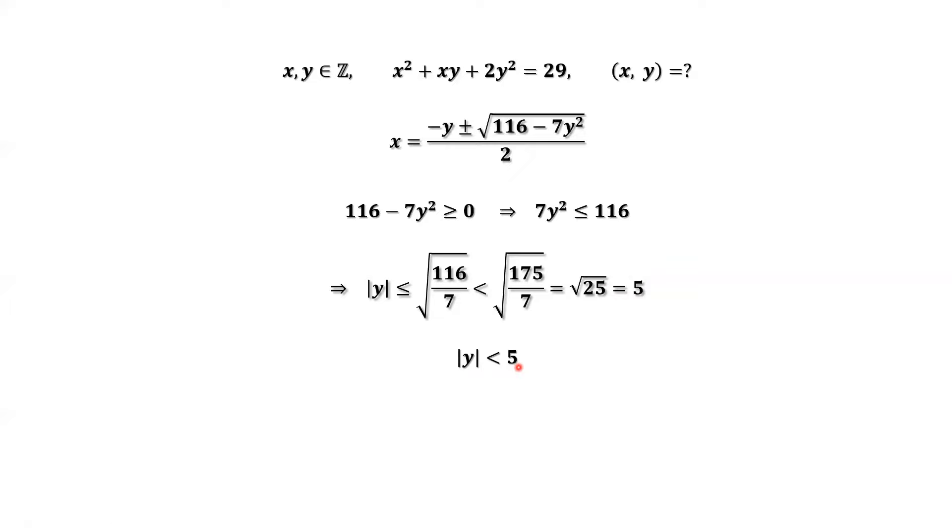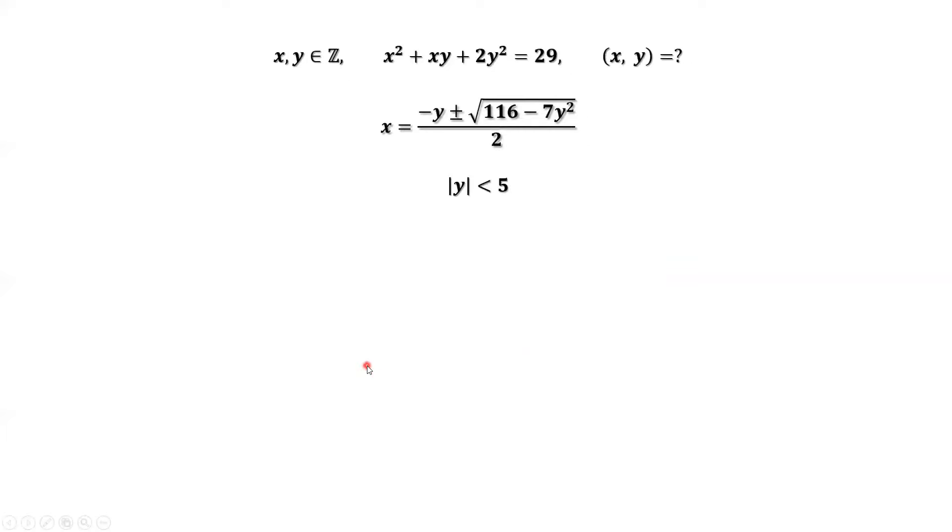We narrow down the search window for y value. This implies y equals 0, ±1, up to ±4. Those numbers are possible solutions for y.